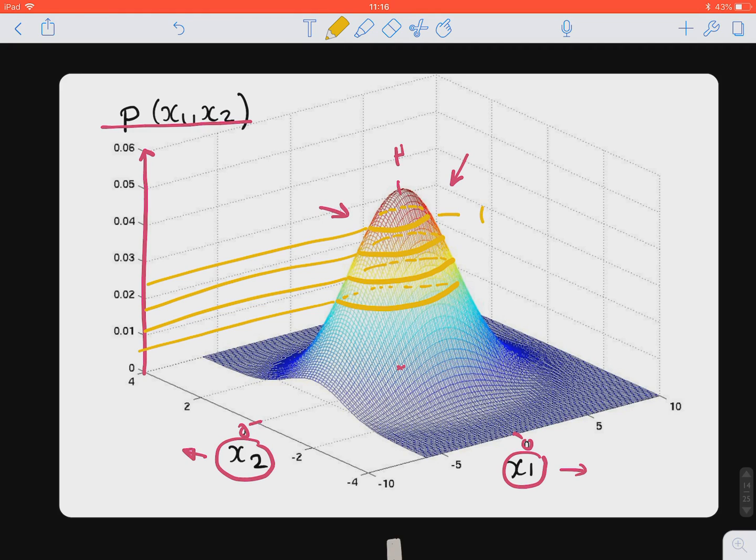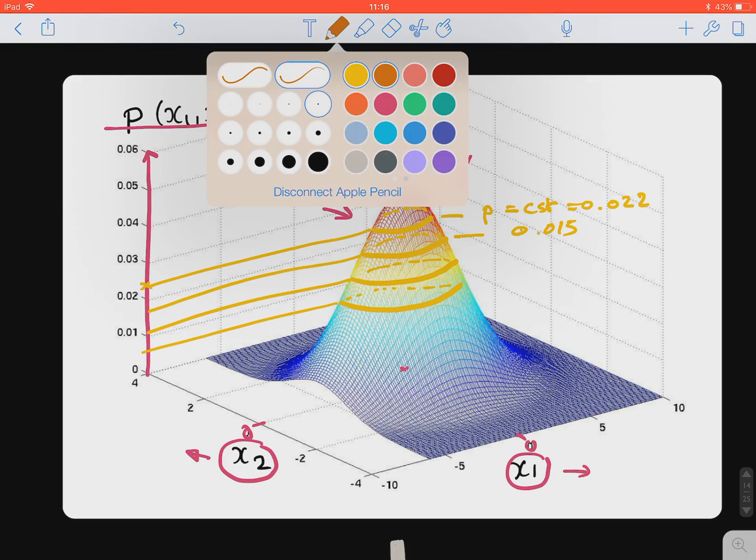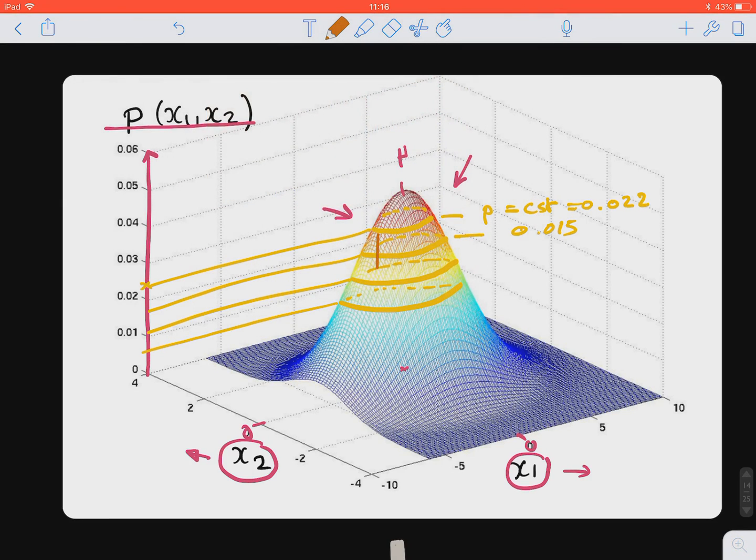So here, the p is a constant. But has different values, for example, maybe 0.022, the other one is like 0.015, like constant values. So if we project those nice rings or circles onto the 2D dimensional plane.